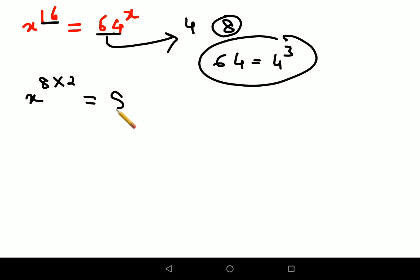And 64 can be written as 8 raised to 2, the whole raised to x. Right, so this is again 8 into 2. And this is coming out to be 8 raised to, see, a raised to b the whole raised to c can be written as a raised to bc.